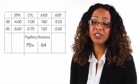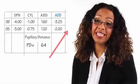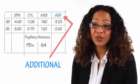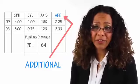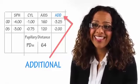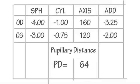The next term you'll see on your prescription is ADD, which stands for additional — probably the easiest term on there. ADD is used for bifocal and progressive lenses, and it's something which helps the vision by adding an additional feature onto the lens to help with activities such as reading or watching television.